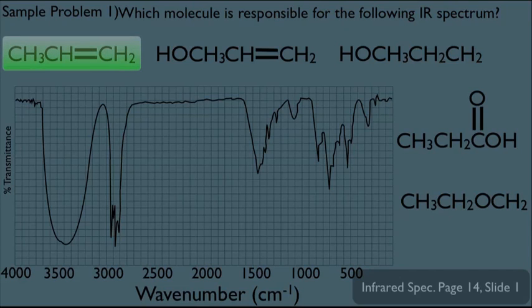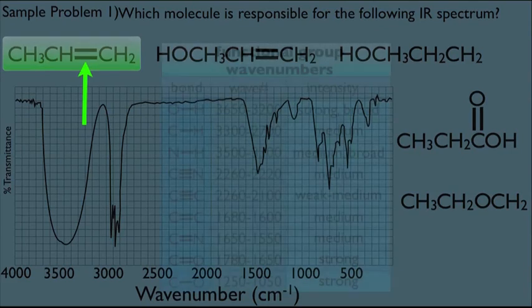Let's start with this first molecule right here. What you do is pick out something in this molecule that is unique. Notice what's unique to him, of course, is his double bond. He's an alkene. Then what you ask yourself is, where would a double bond peak in the IR?